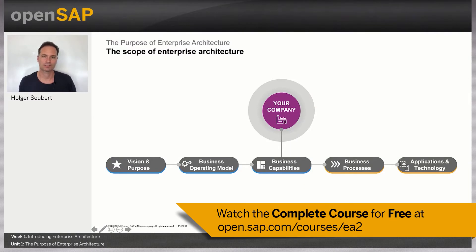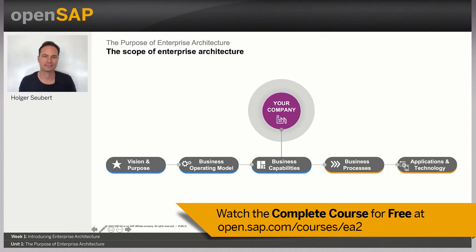Let's start with a big picture by taking a look at the basic building blocks of every company. Every company has some sort of vision and purpose defining why the company is on the market. It is worth mentioning that making money is not a vision but instead should be a result of the company's vision and purpose. For example, SAP's purpose is to help the world run better and improve people's lives.